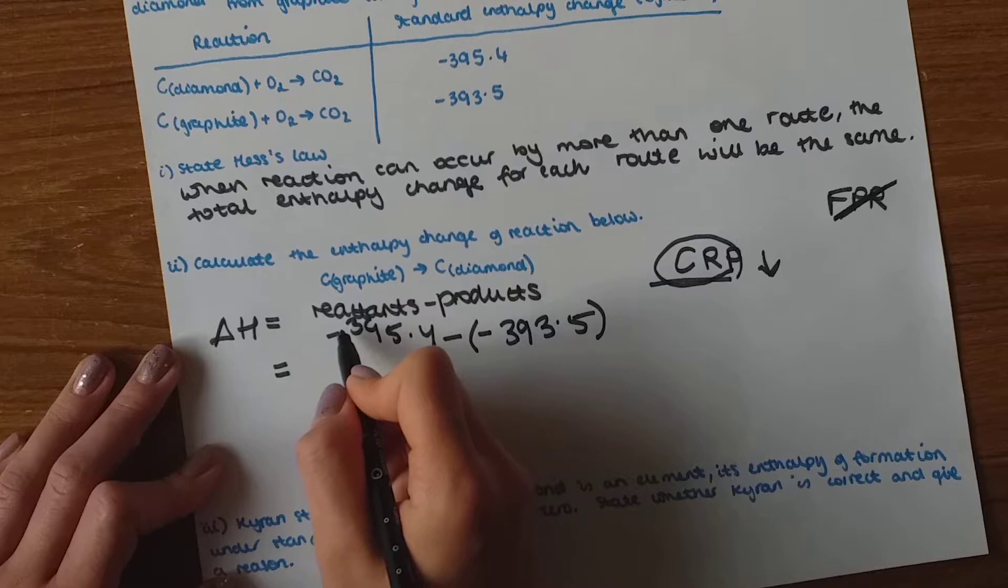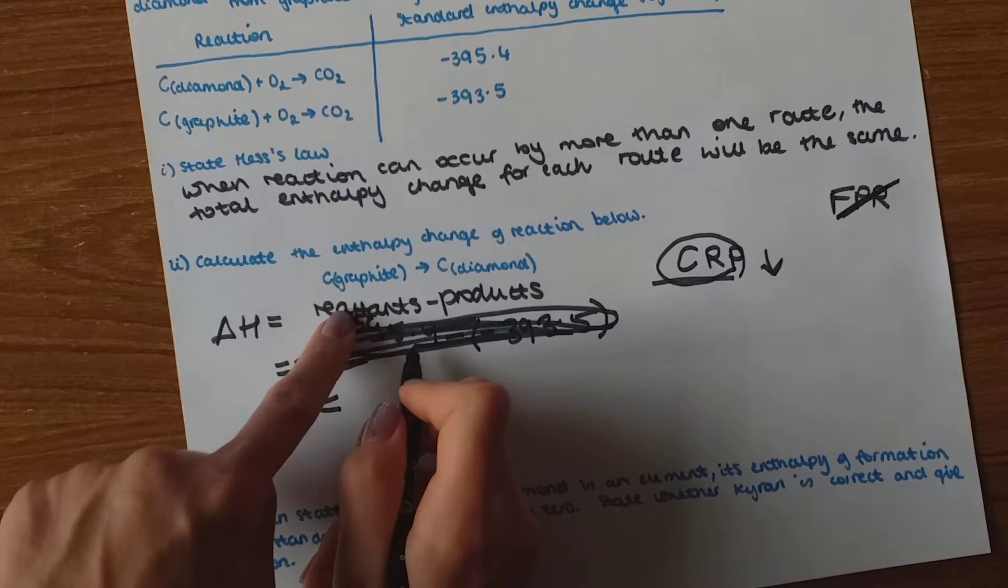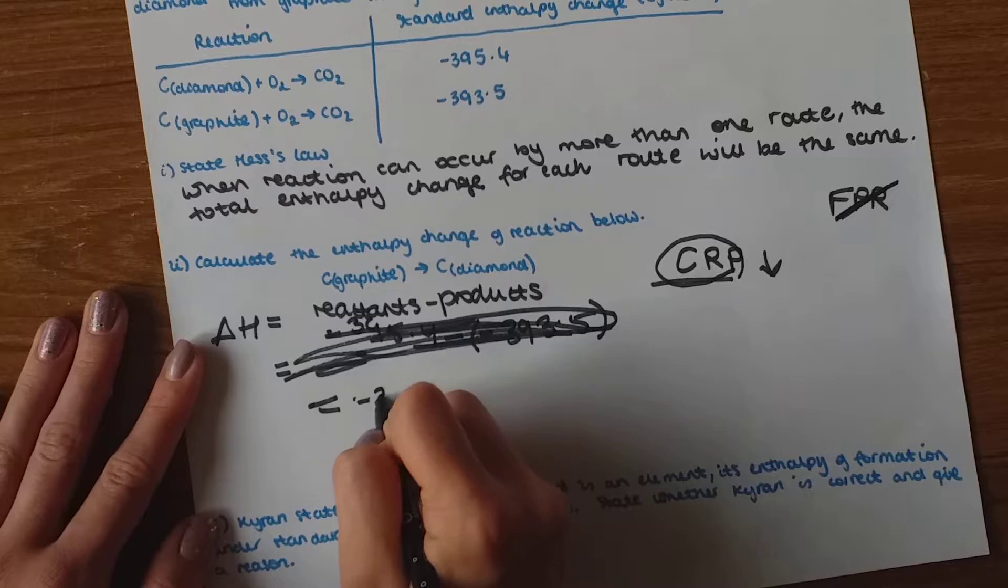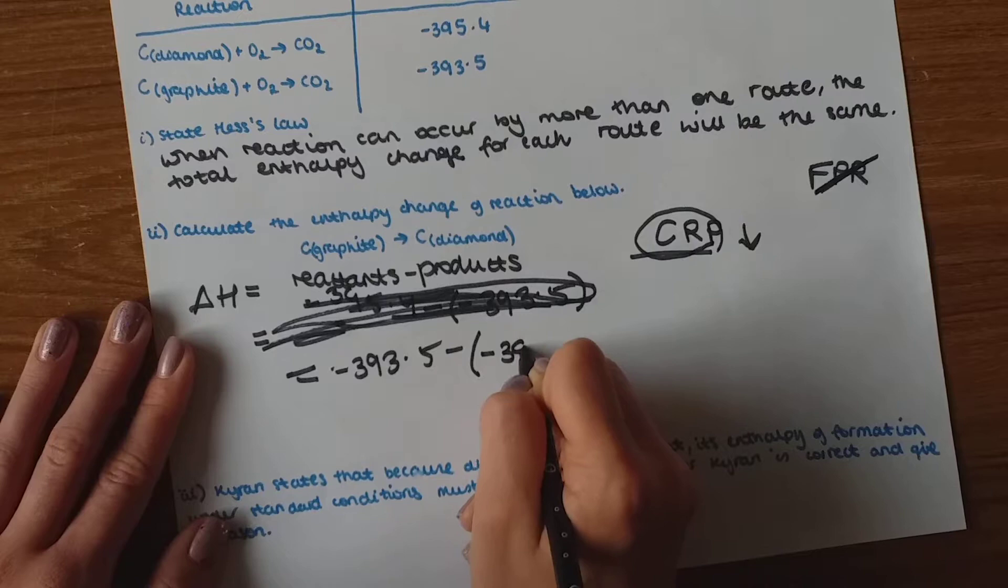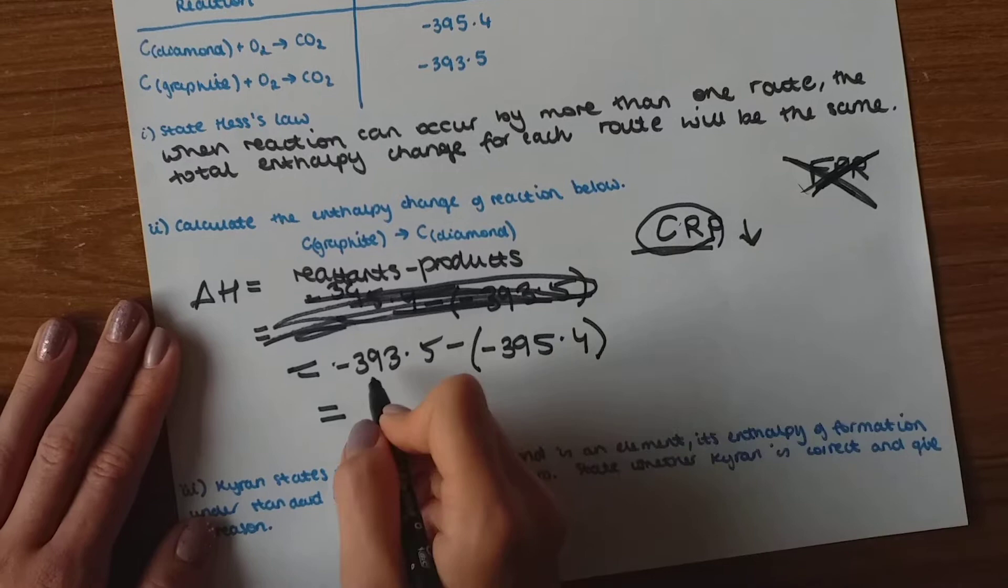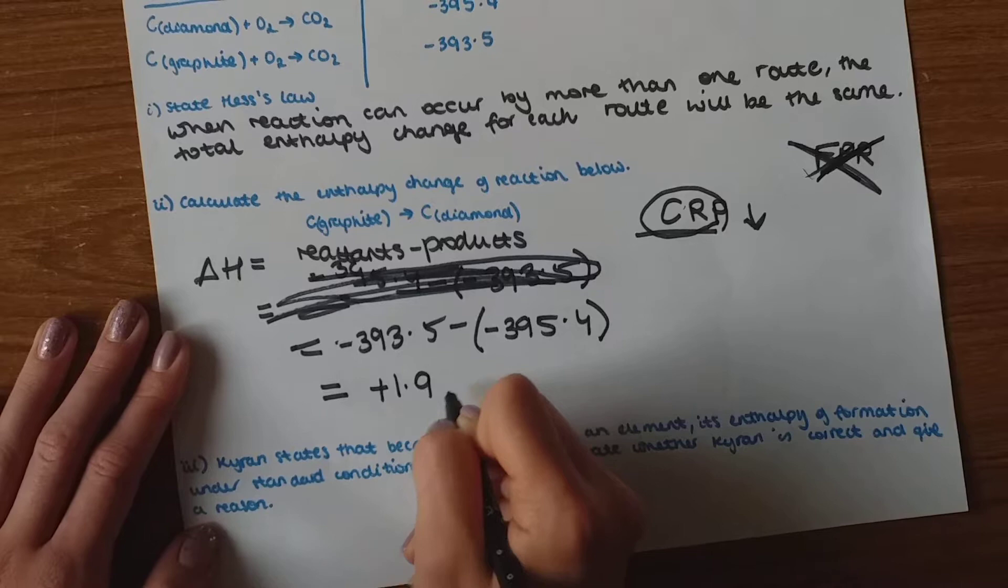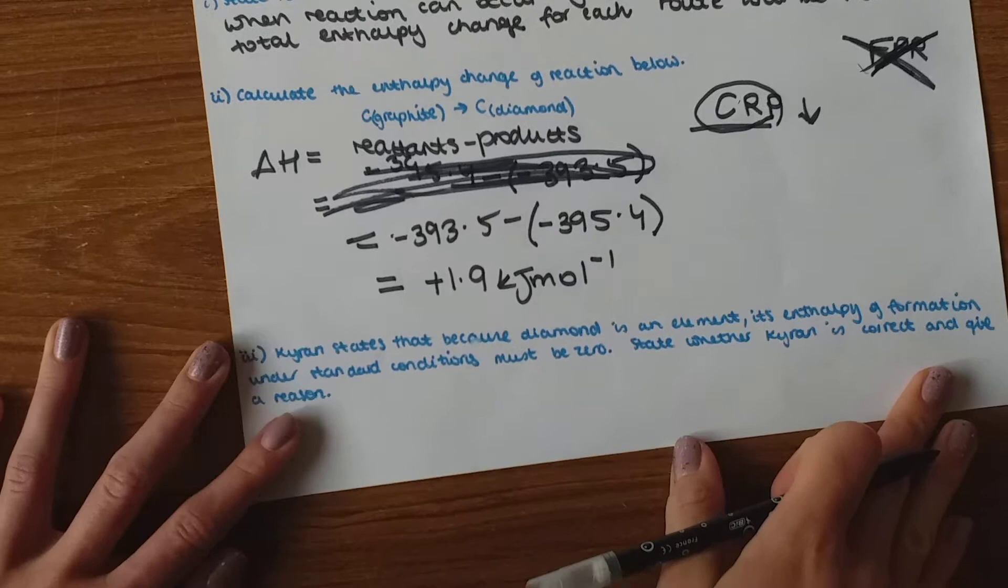I think I just did it all wrong. Sorry guys. My bad. The reactants and the products. So graphite minus 393.5 minus all the products which is minus 395.4. I just told you to use this one and I've used this instead. This is not right. It's CRP for this example. Reactants minus products. And minus 393.5 minus 395.4 is plus 1.9 and the units kilojoule mole minus one.